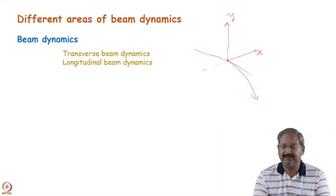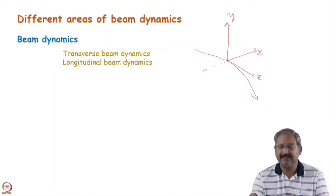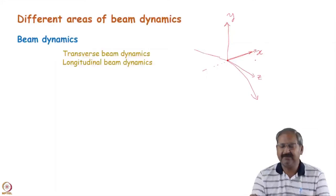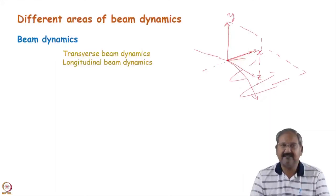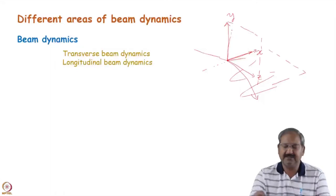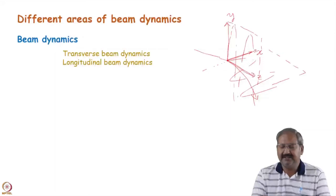In the direction of beam propagation we take z. We were talking about the horizontal betatron motion, where oscillations take place along the x-axis while the beam is moving along the z-axis. Another motion was the vertical betatron motion, in which oscillations were along the vertical axis while the beam moves in the z-axis. Now we will talk about the third axis, z.